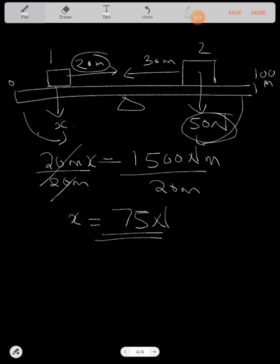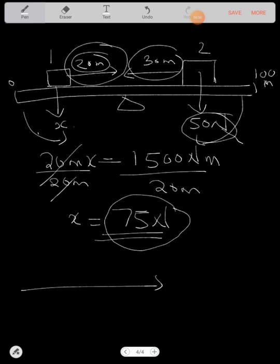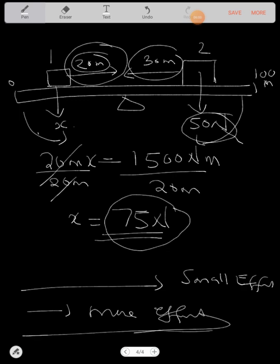Now you can notice something here. The smaller the distance, the larger the weight. But the larger the distance, the smaller the weight. This comes to a conclusion that if you want to apply an effort on an object, you must have a longer distance, then your small effort will be applied. But if you have a small distance, you apply more effort. So thank you so much for it.